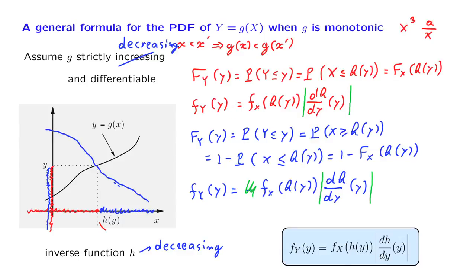Our final conclusion is that in either case, the PDF of y is given in terms of the PDF of x times the absolute value of the derivative of the inverse function h.